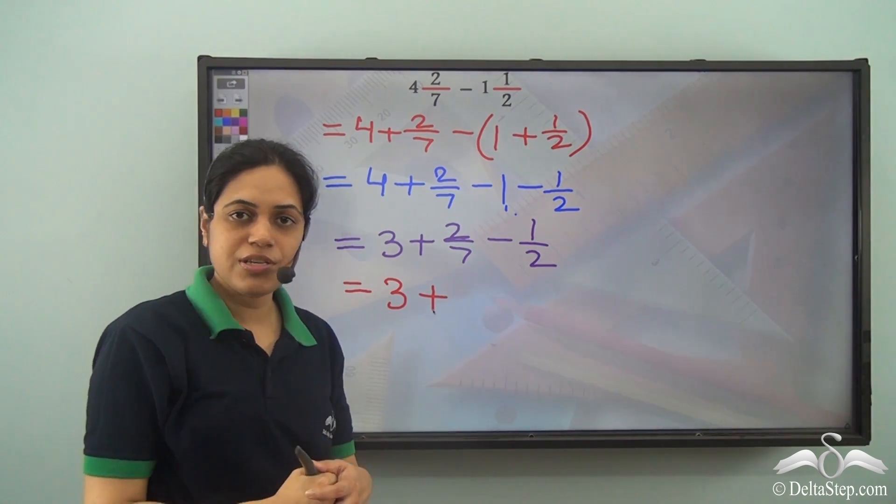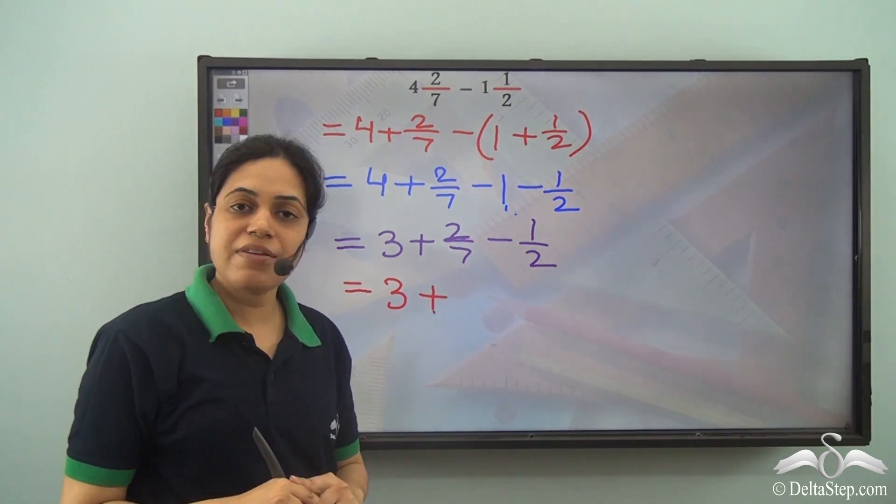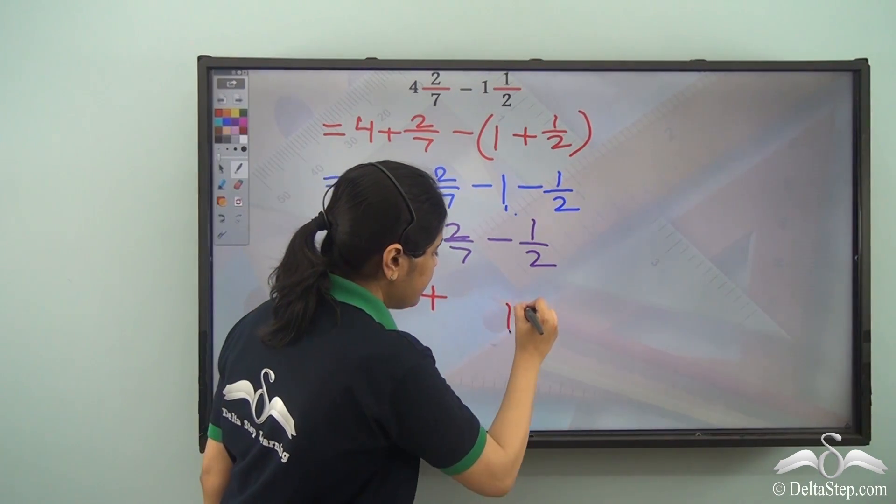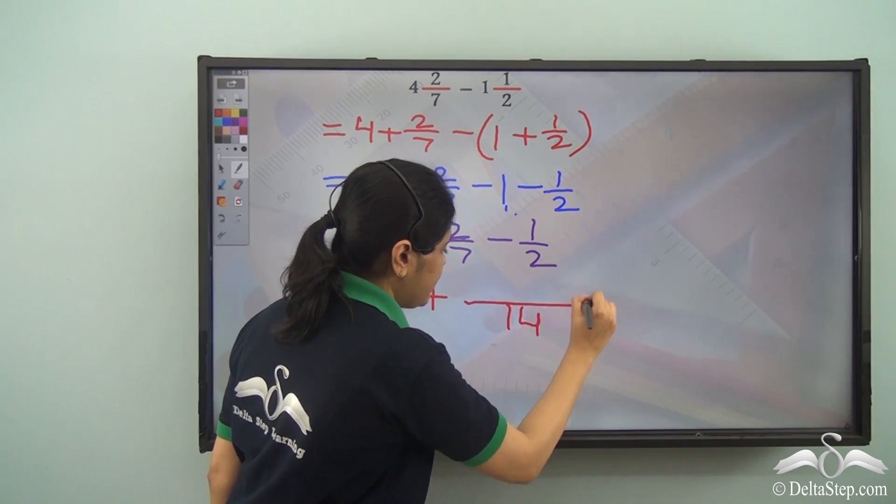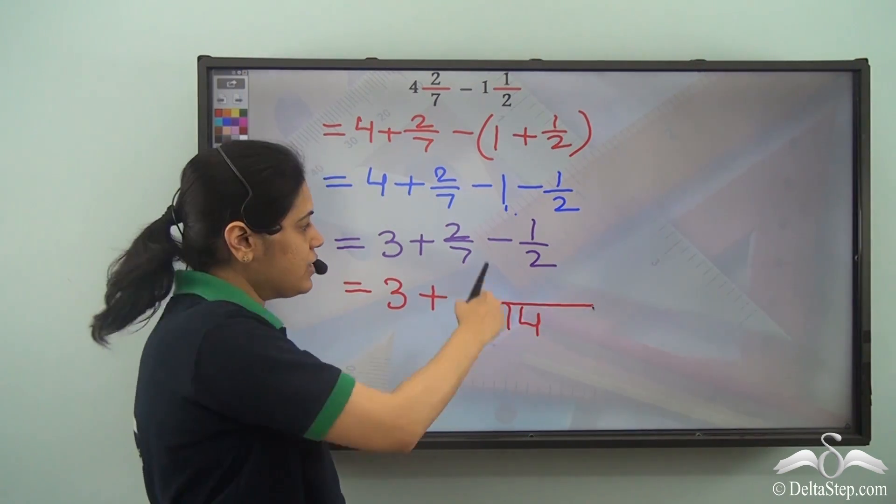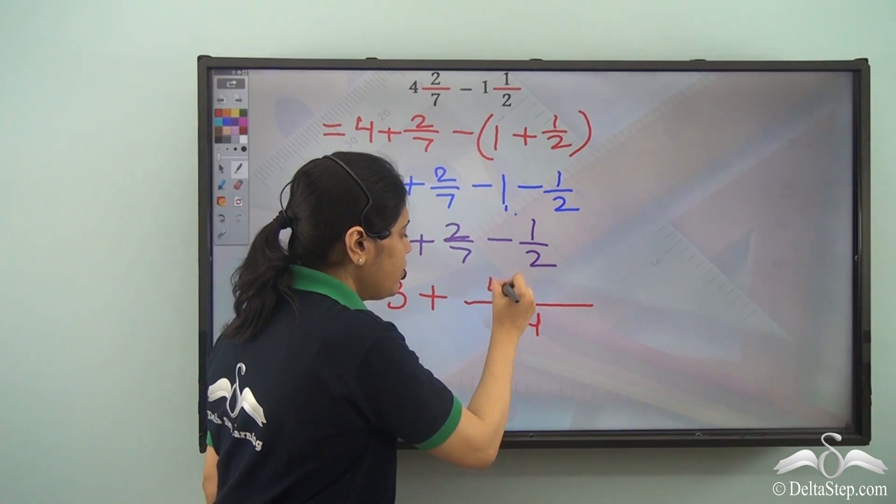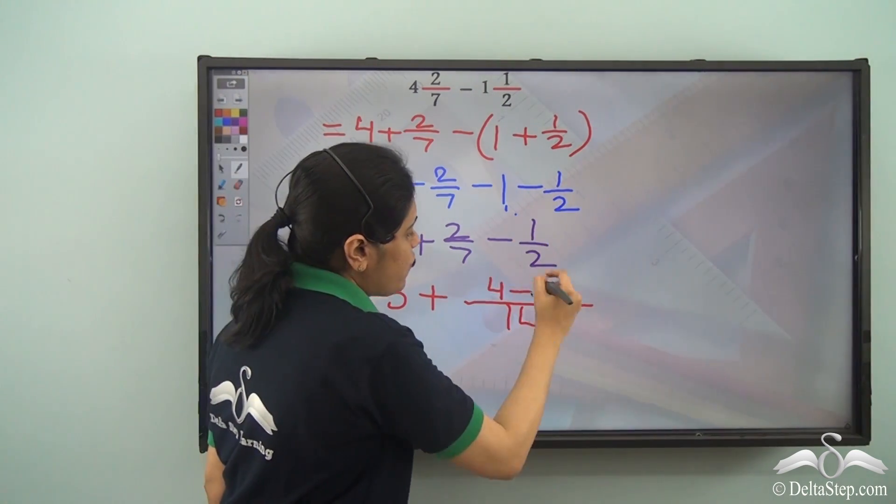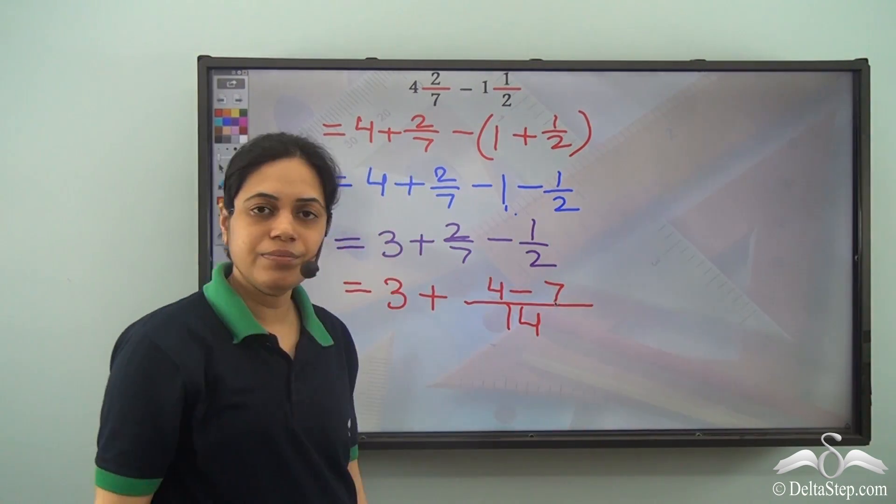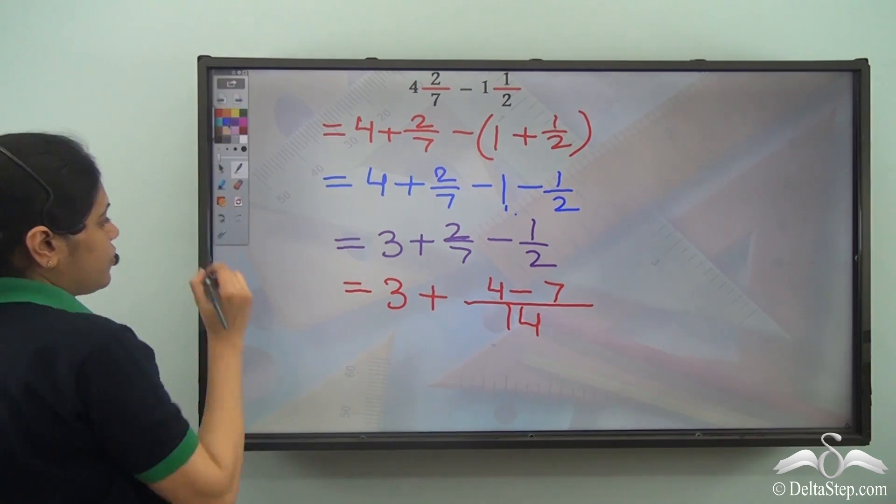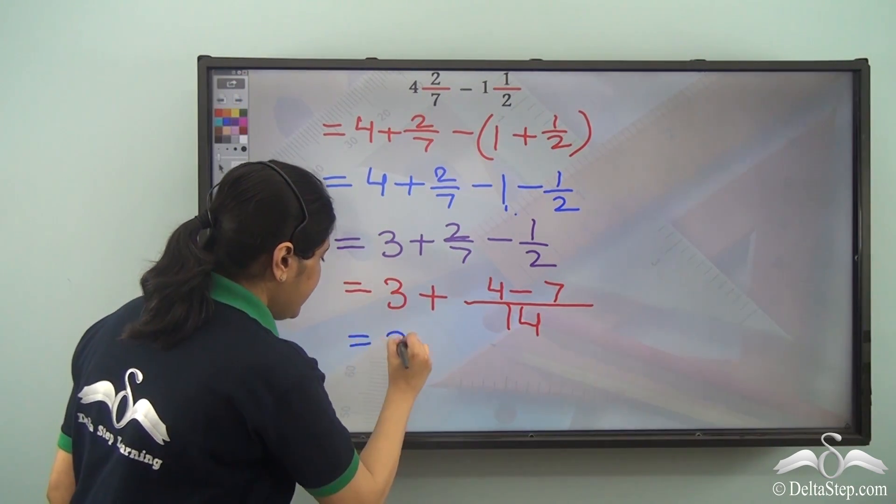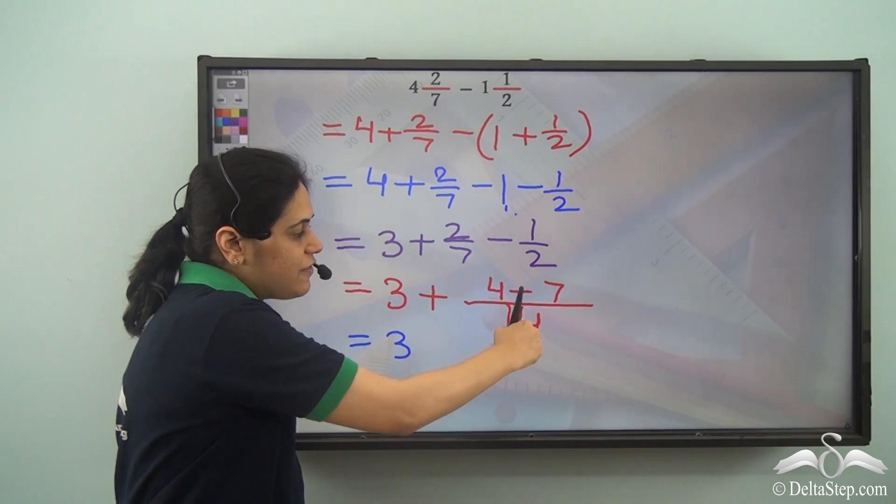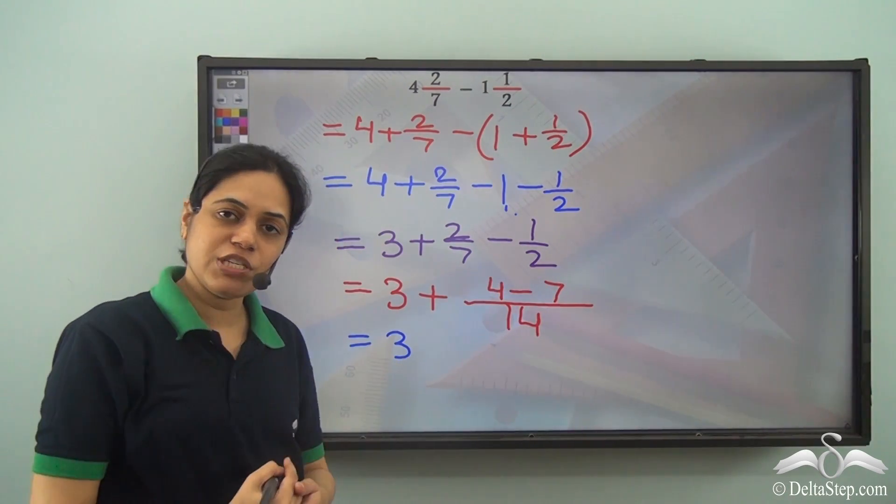Now these are unlike fractions. So the LCM of 7 and 2 is 14. 7 into 2 is 14. Now 2 into 2 is 4. 2 into 7 is 14, so 1 into 7 is 7. So I have 3.